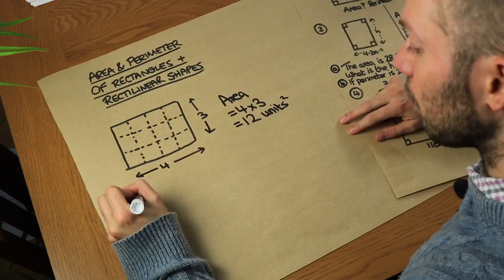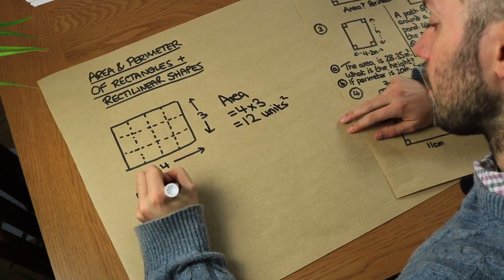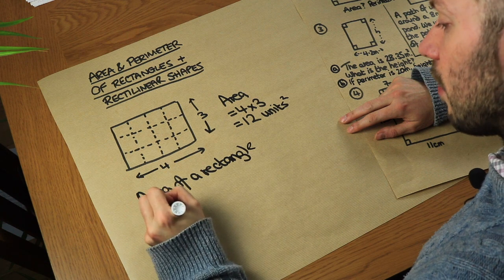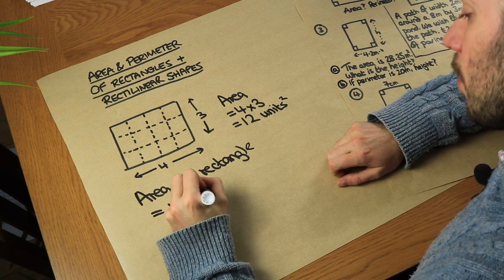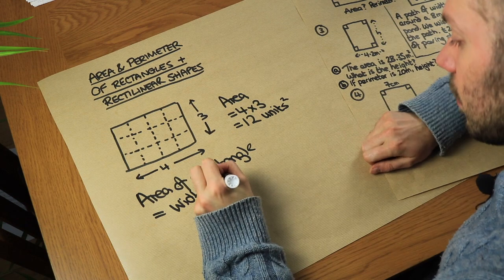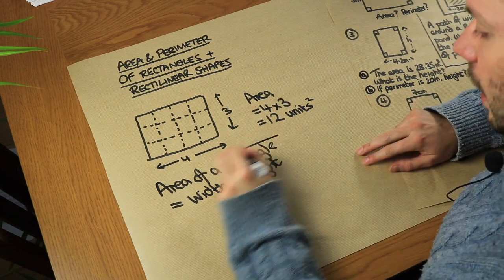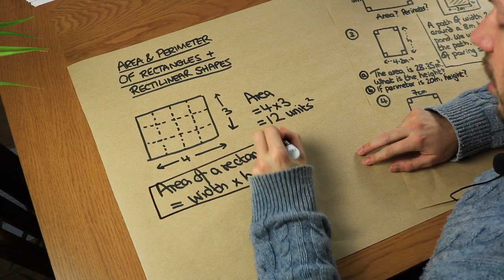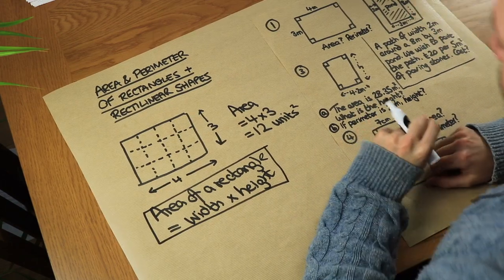So we can see that the area of a rectangle is just the width multiplied by the height, and that is a key formula that we're going to use for the rest of this video.